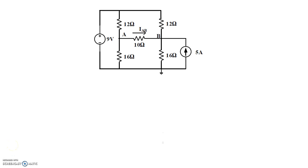Welcome. In this problem, we have a circuit with a 9-volt source and a 5-amp current source. We are asked to find the voltage across the 10-ohm resistor, VAB, and the current through the 10-ohm resistor as indicated by the current direction from A to B — IAB and VAB.